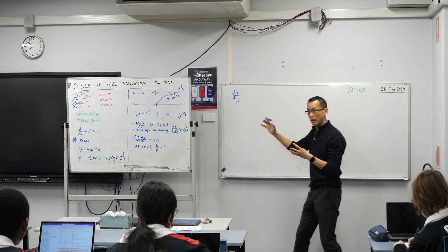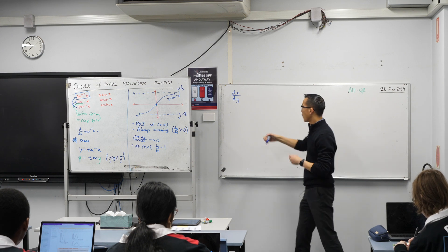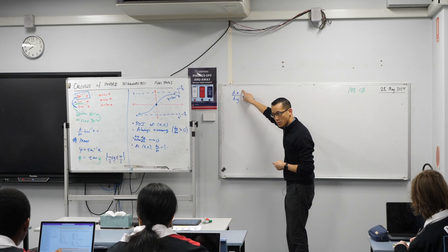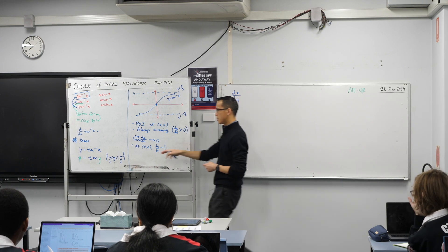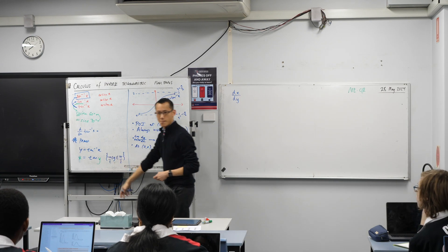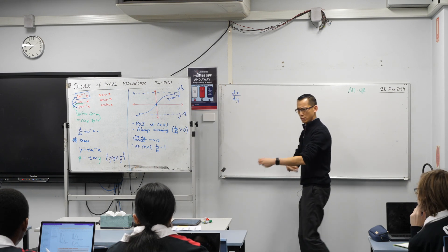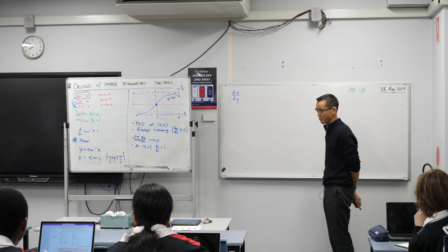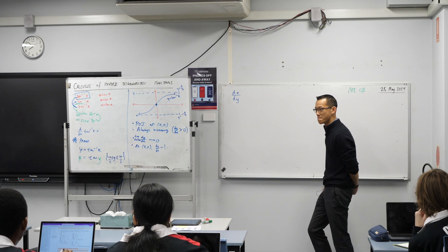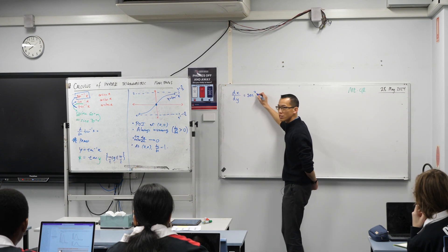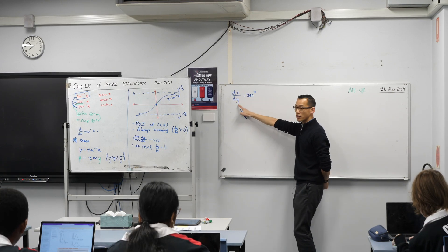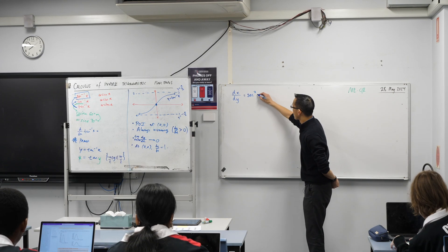Just pause for a minute and think about what we've done here. We are differentiating x with respect to y, this is the new variable we're thinking about. And you know what this derivative is, you did it a while ago. Does anyone remember what the derivative of tan is? Sec squared. Now we're so used to just writing x after this, but our function is in terms of y. So I'm going to write this.